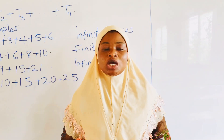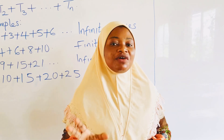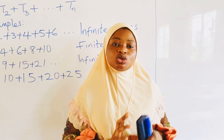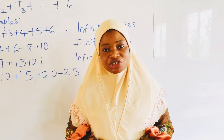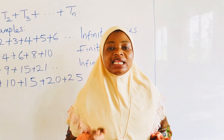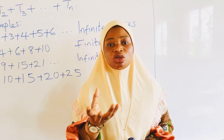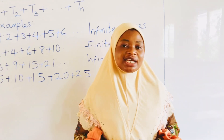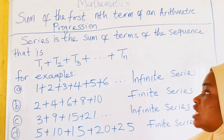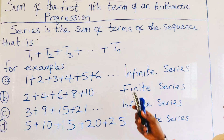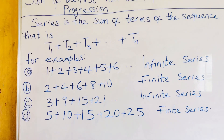Welcome back to this channel. We define a sequence as a list of numbers governed by some rules. Those rules could be addition, subtraction, multiplication, or division. Now, if we add the terms of a sequence together, that is known as a series. The first term plus the second term plus the third term, all the way to the last term, is what we refer to as a series.